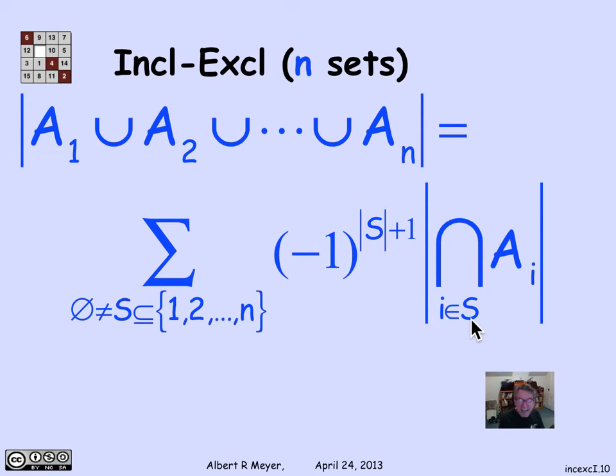Now what's the sign of that size of intersection? As we said, if it's of odd size, I want it to count positively. So if I take minus 1 to the odd size plus 1, I get an even power of minus 1. So it comes out to be 1. If on the other hand, the size of S is even, so I'm taking an intersection of an even number of sets, then this number to the plus 1 is odd. I'm taking minus 1 to an odd power. And sure enough, I'm getting the negative sign on all the intersections of odd size. So that's what this rather concise but hairy formula looks like.